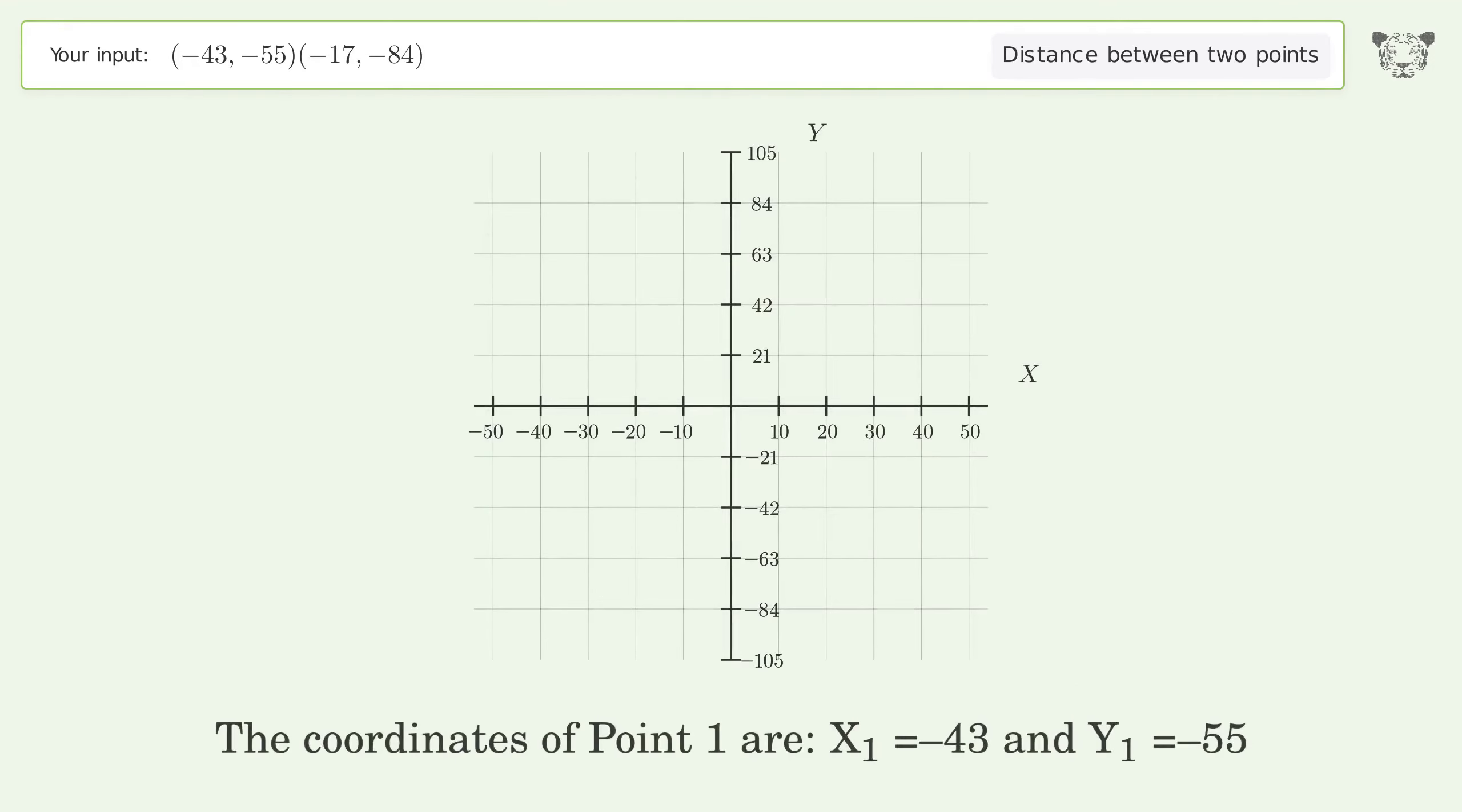The coordinates of Point 1 are x1 equals negative 43 and y1 equals negative 55. The coordinates of Point 2 are x2 equals negative 17 and y2 equals negative 84.